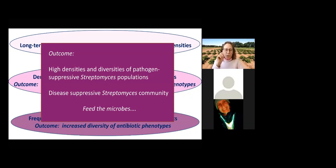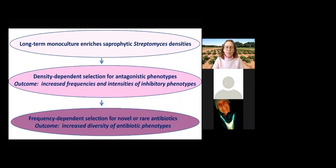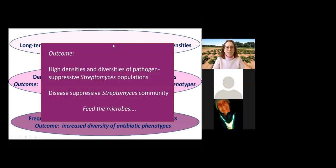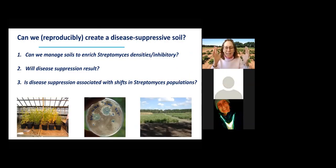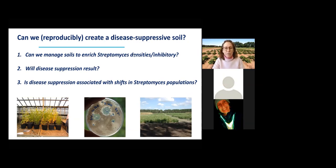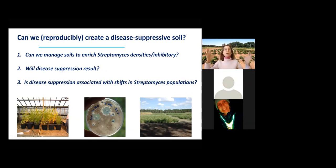If we oversimplify, it points to one simple step: maybe it all starts with feeding the microbes. The data suggests this model could work. Can we reproducibly create a disease-suppressive soil? Can we manage soils to increase the densities and inhibitory phenotypes of Streptomyces, and will disease suppression result? And can we show that focusing management on this one genus in this extraordinarily complex soil microbiome is going to be sufficient for getting positive outcomes?